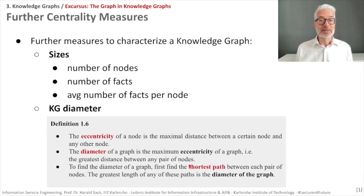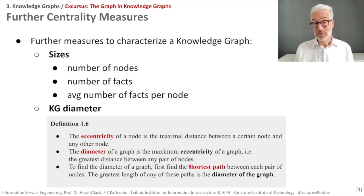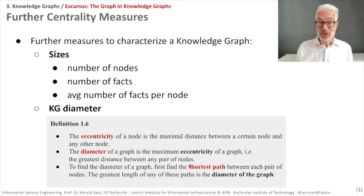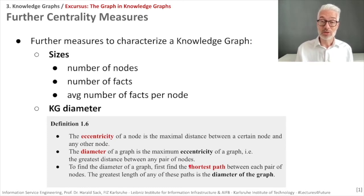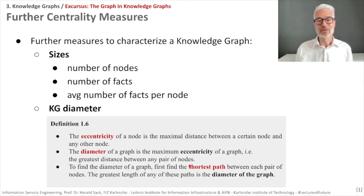Further measures to characterize a knowledge graph include its size. For example, Wikidata is larger than any single language version of DBpedia. Size can be measured by the number of nodes or by the number of triples. You can also look at the average number of facts per node, which tells you about coverage — how much is known for every single entity in the knowledge graph.